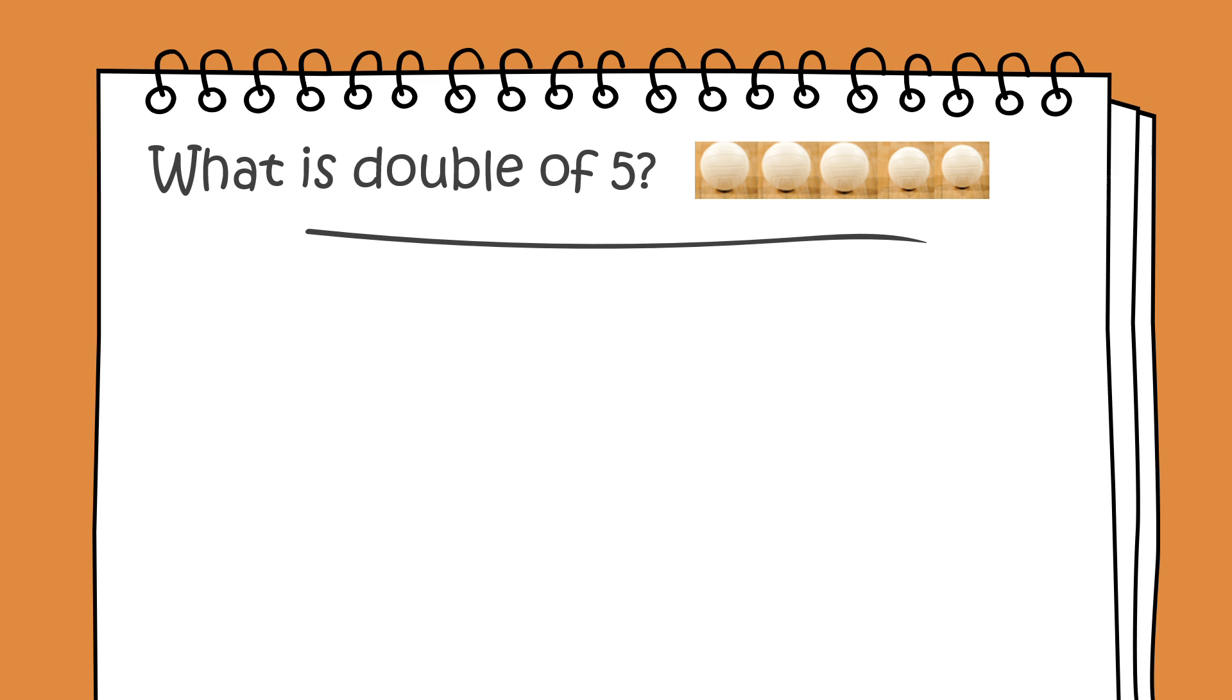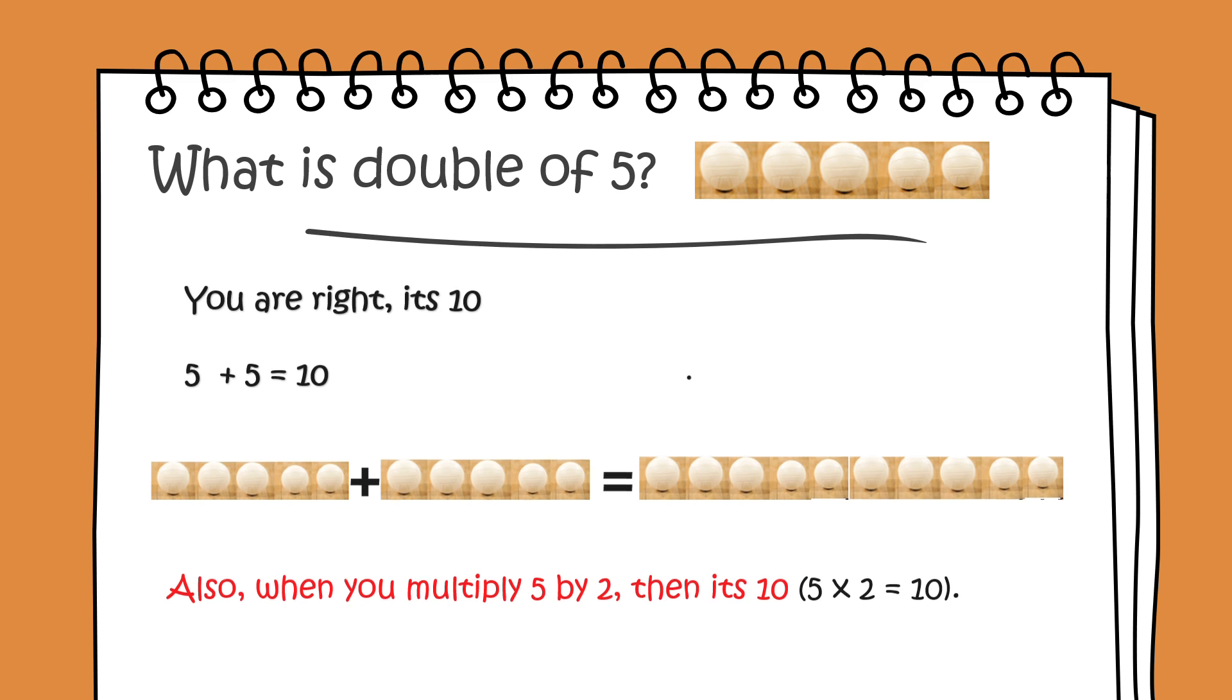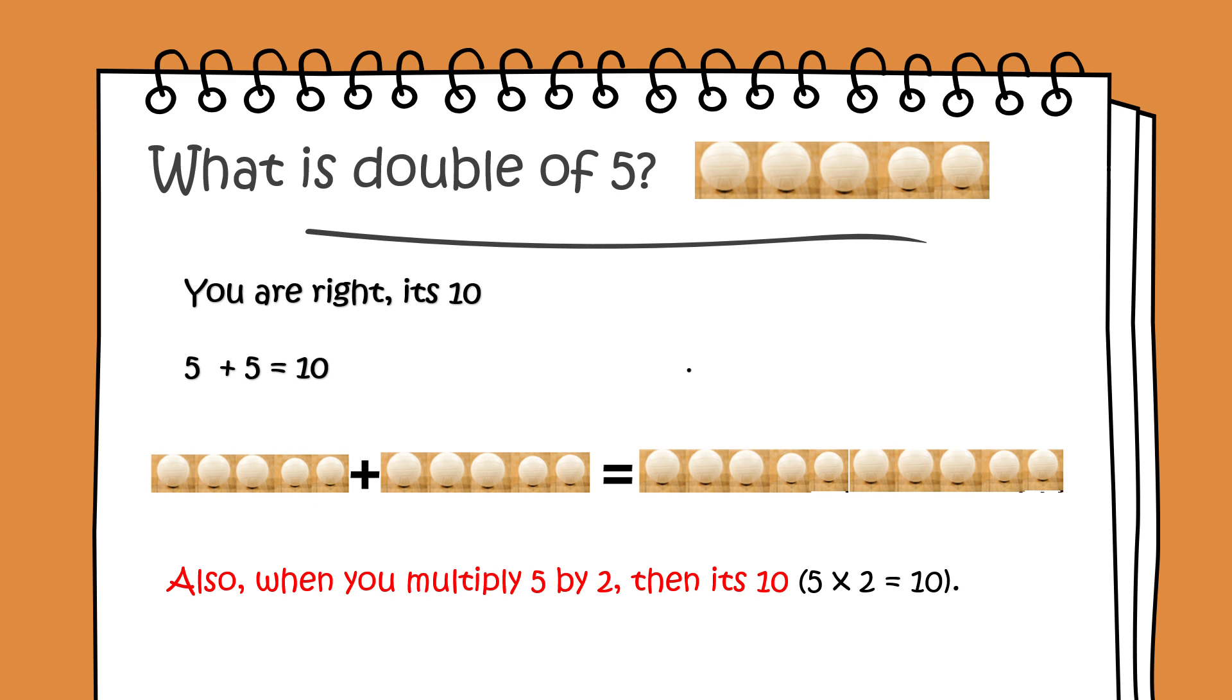What is double of five? You're right, it's ten. Five plus five is ten. Also, when you multiply five by two, then it's ten. Five multiplied by two is ten.